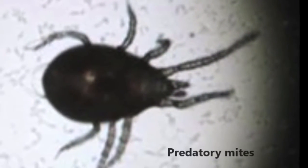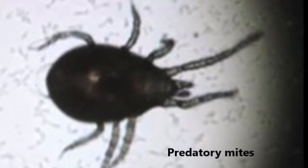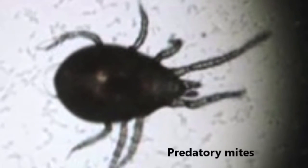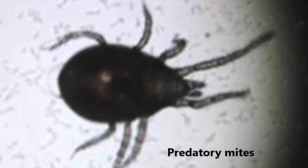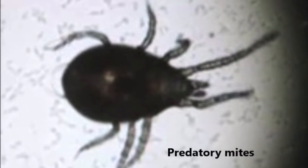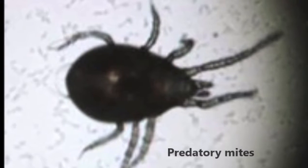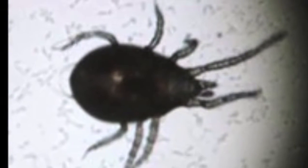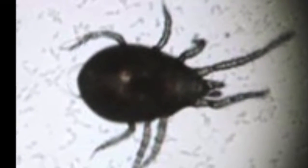Don't confuse predatory mites with spider mites. Predatory mites are predators of spider mites — they are bigger and faster runners than spider mites, and are usually teardrop-shaped.